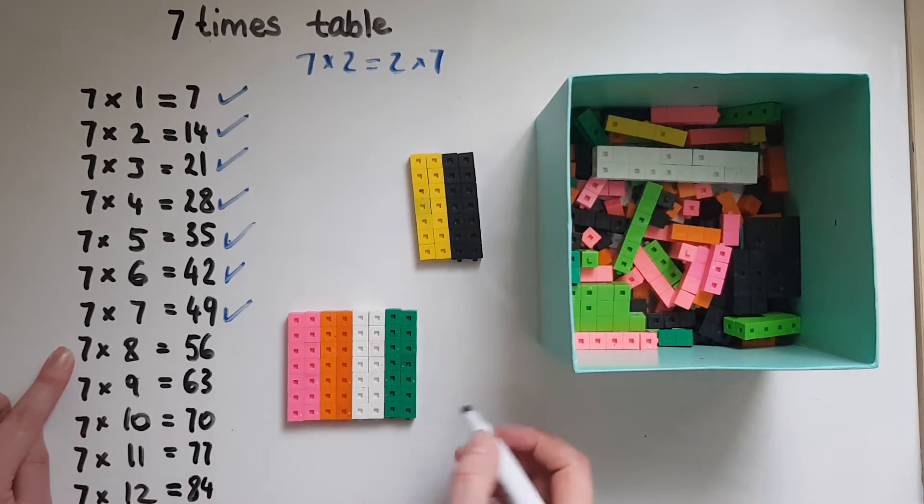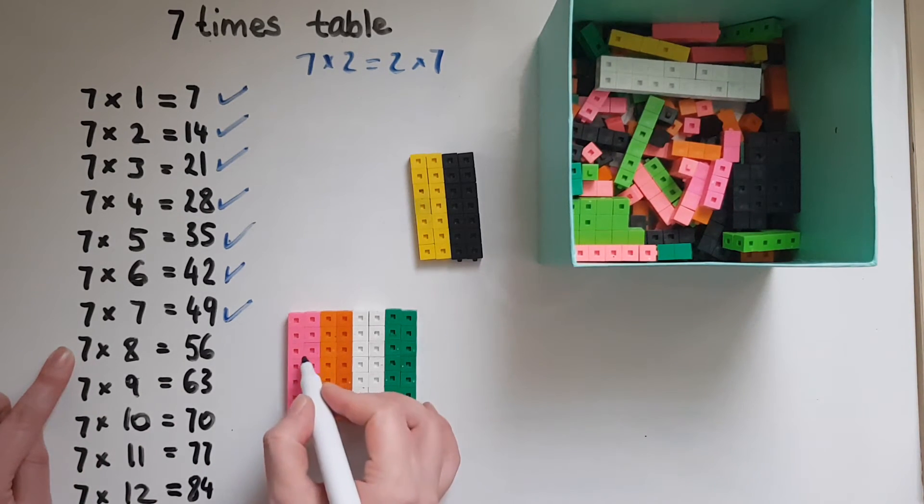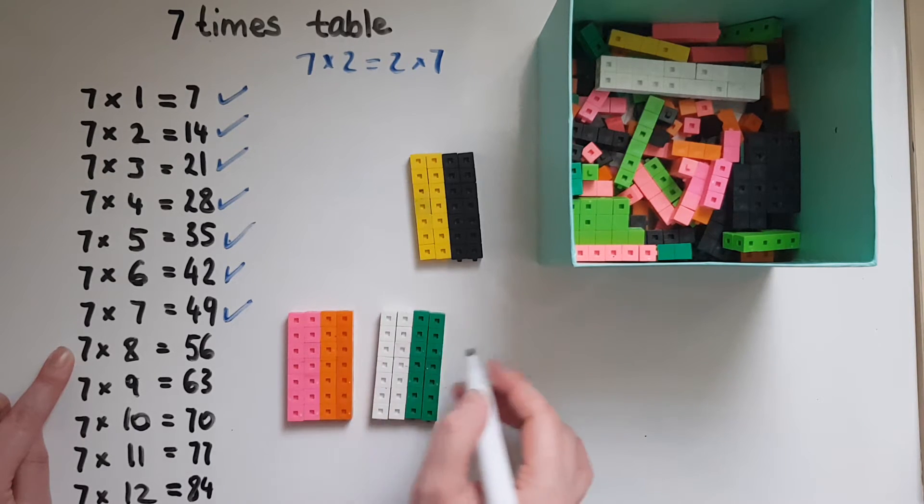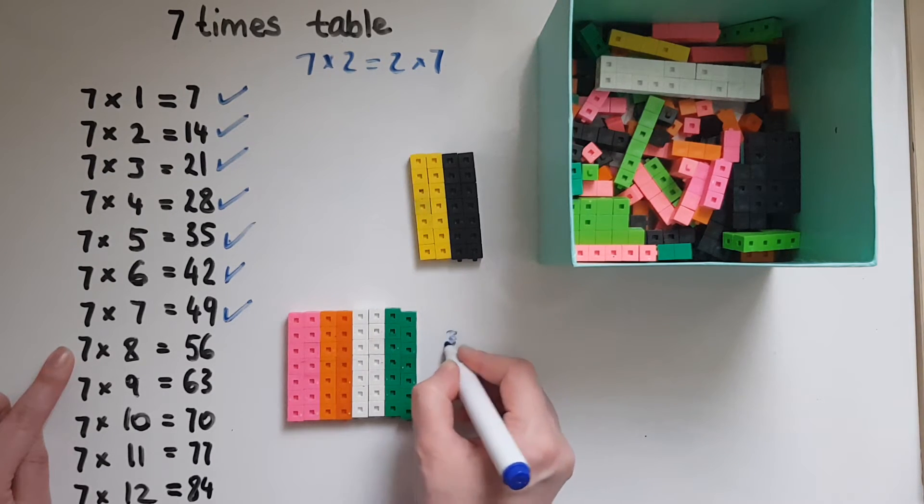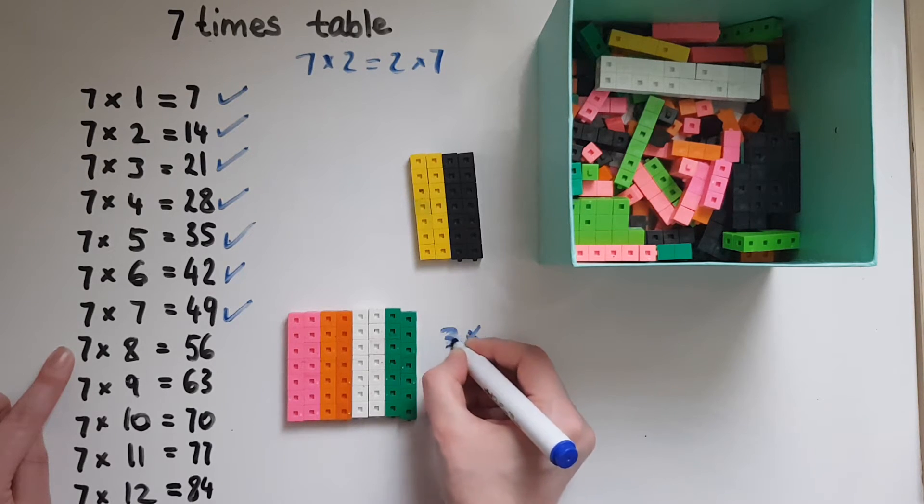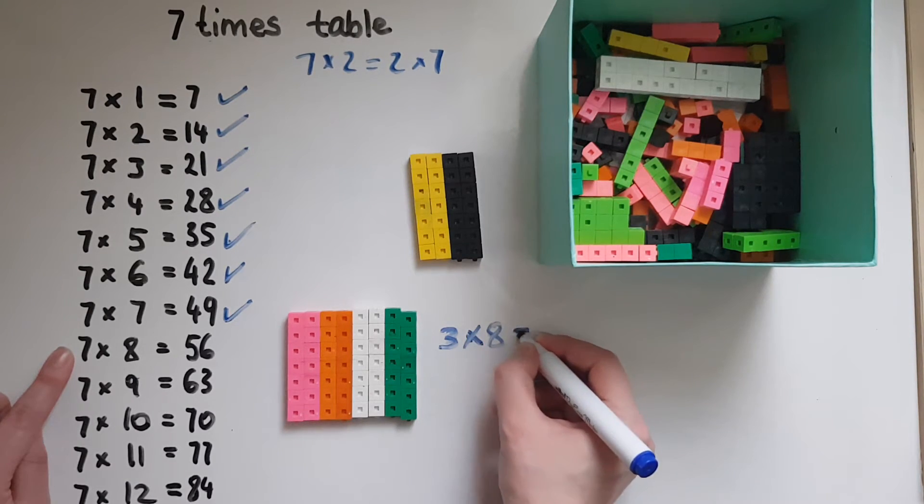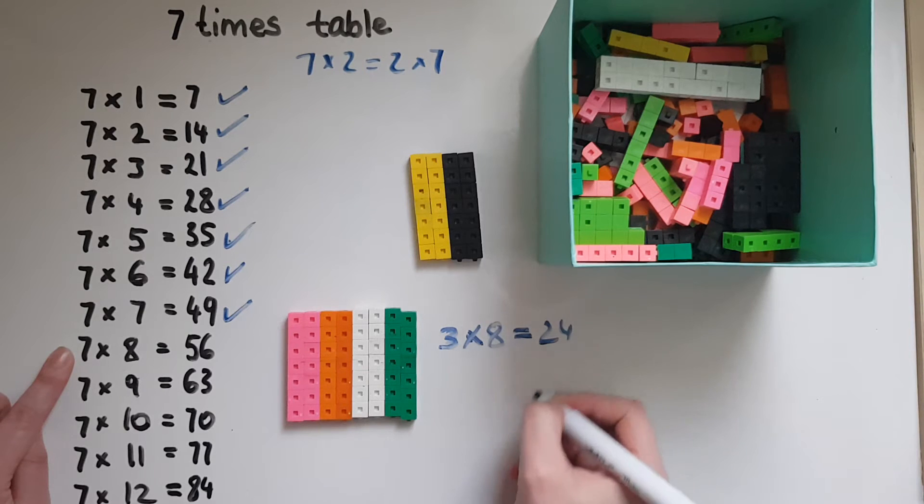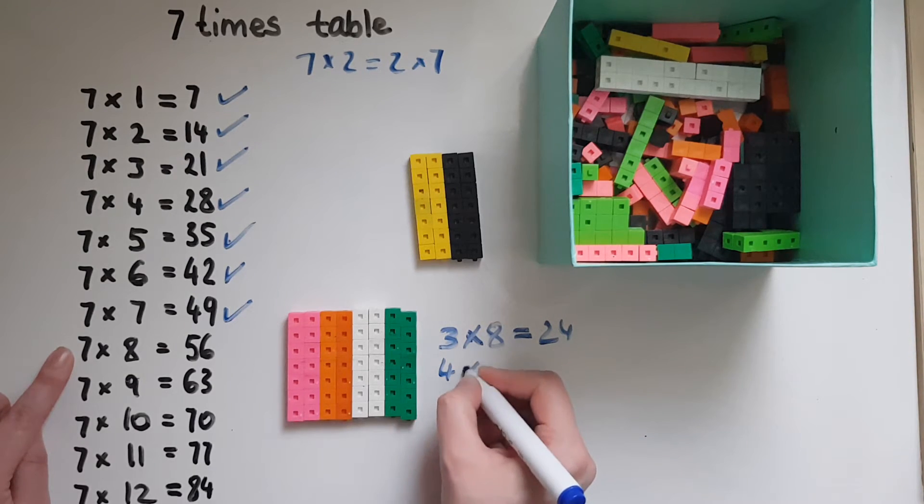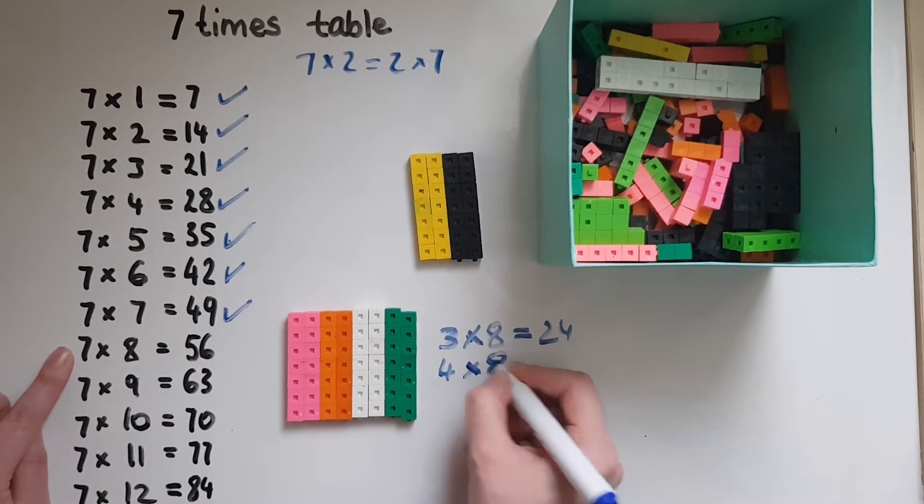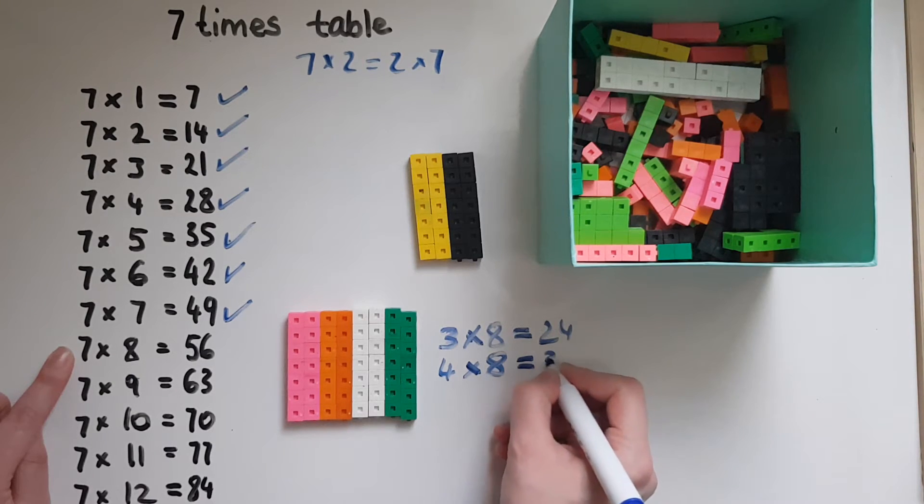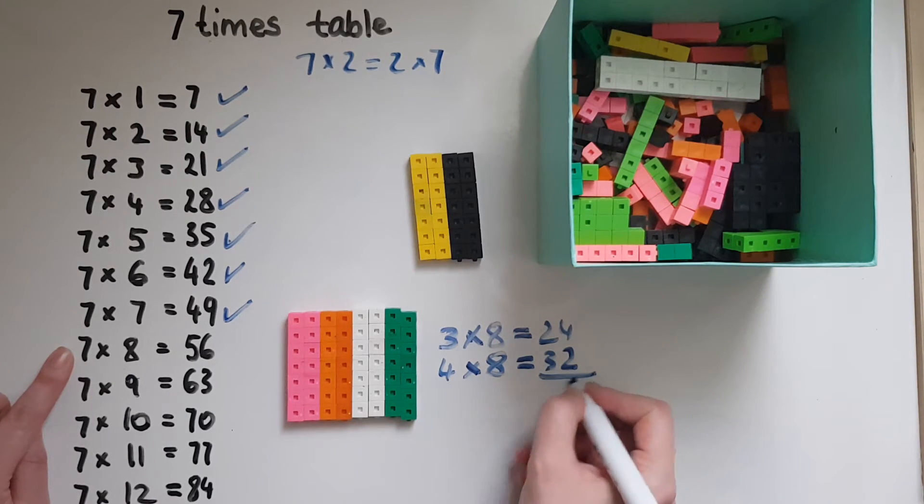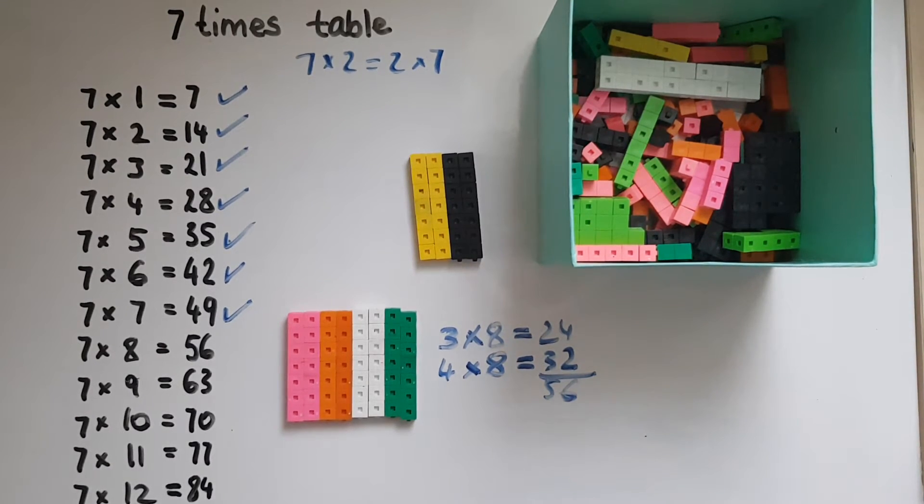you know the three times eight, for example. So the three at the top, we can make it three times eight, which is 24, and then four times eight, which is 32. Add them together gives us 56. Or